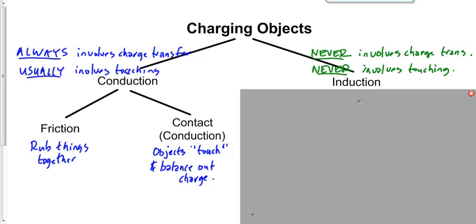They don't balance during friction, but the law of conservation of charge still holds. When you rub two objects together — say the balloon and hair start as neutral and neutral — electrons transfer from one to the other, so one becomes negative seven and the other becomes positive seven. The charges become opposite because electrons moved from one to the other. The total amount of charge still remains the same, governed by conservation of charge.